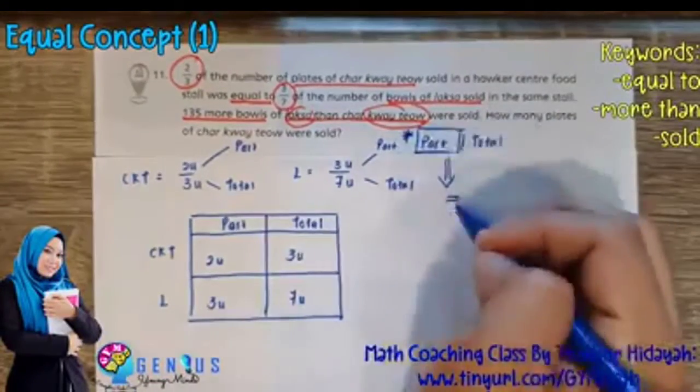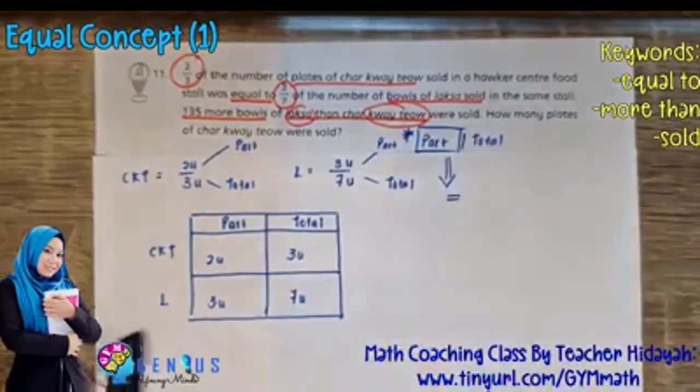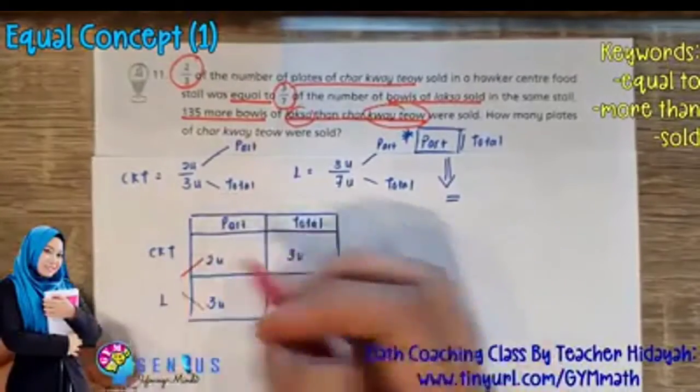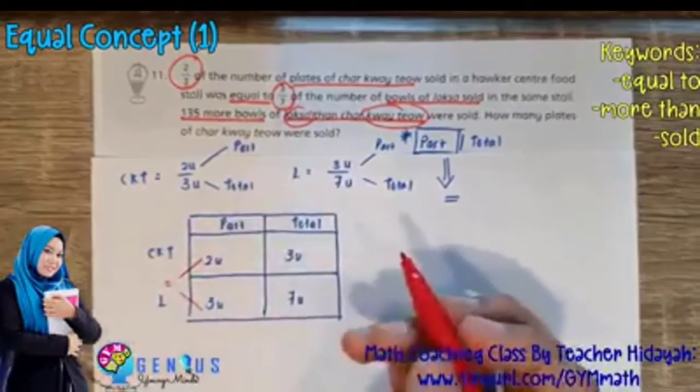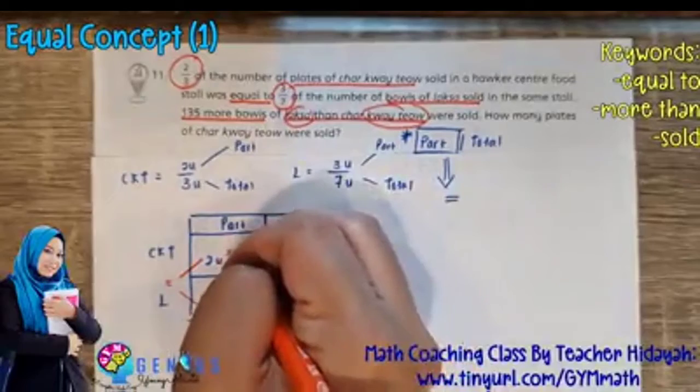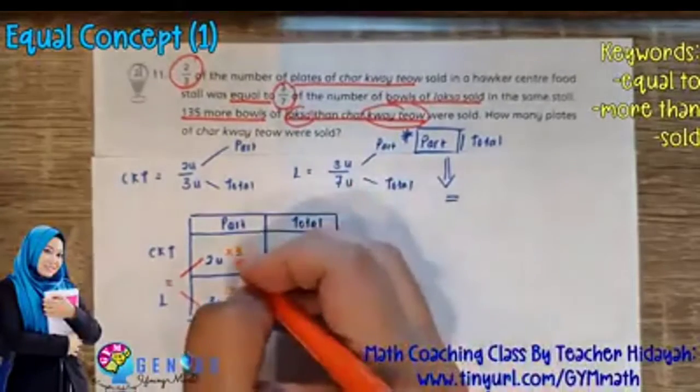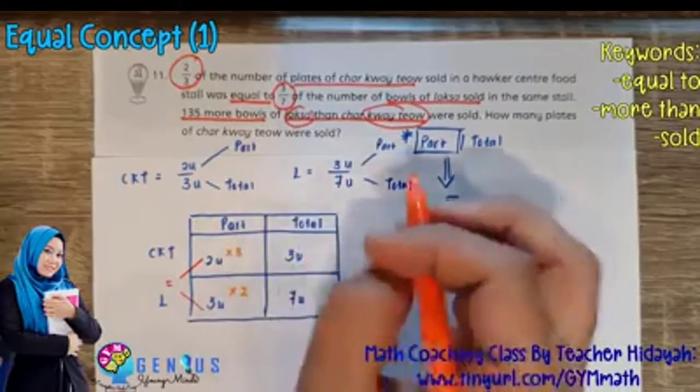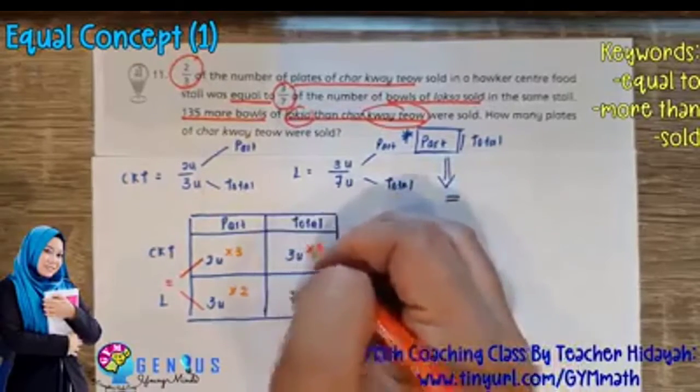Okay, now as I mentioned to you, the part must be the same, must be equal. So we look at Cha Kuei Tiao and Laksa part. 2 and 3, they have to be equal. Make them the same. How do we make them the same? So you have 2 times 3 here and here times 2. Whatever you do to the box in the row for the first item, the next box in the row for the same item, you have to do the same.